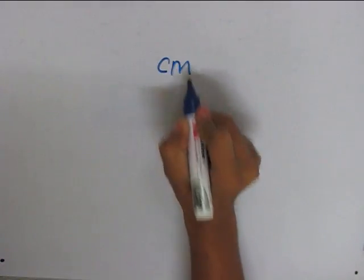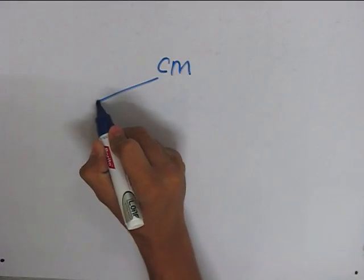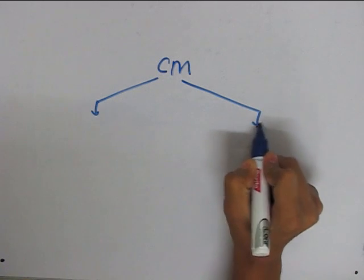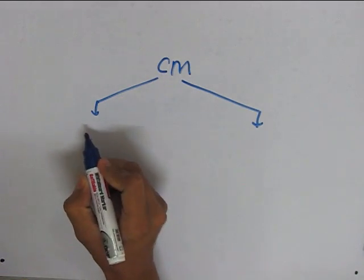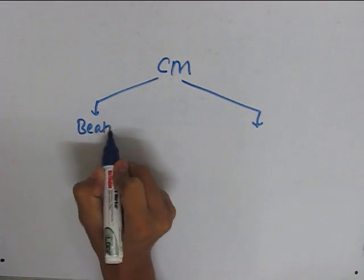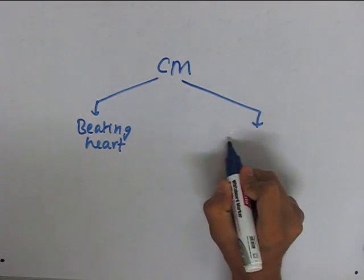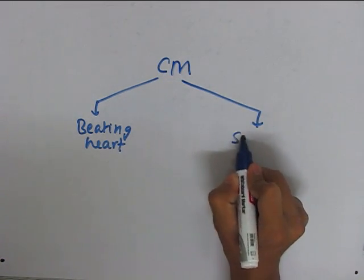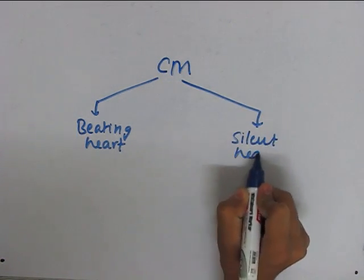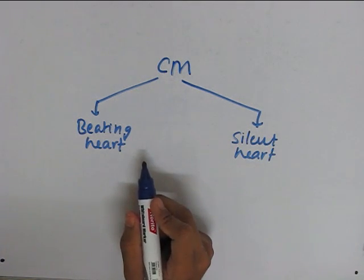The properties of cardiac muscle are divided into two parts. These are the properties which are seen in a beating heart and the properties which are seen in a silent heart. I am going to be dealing with both of these properties separately.